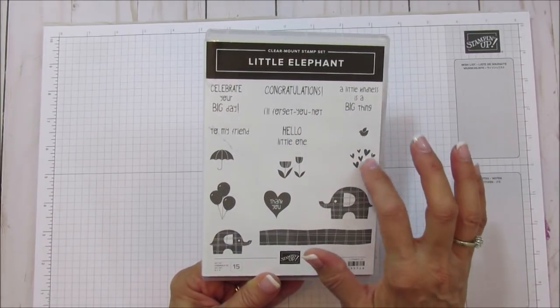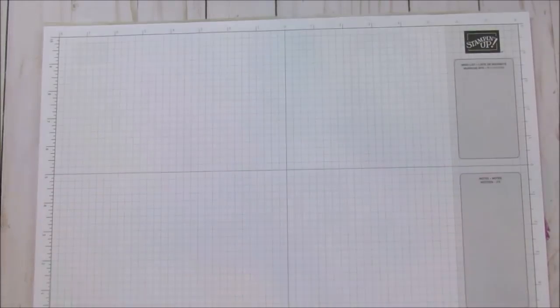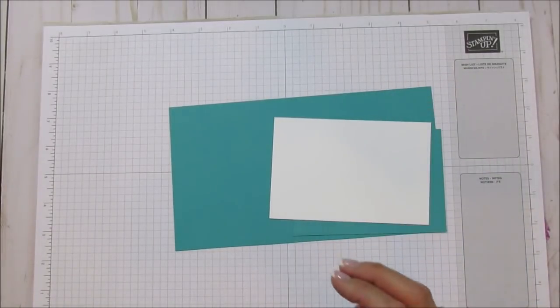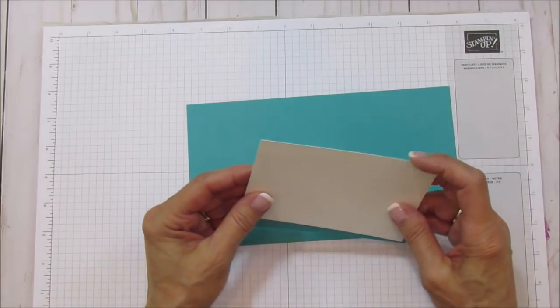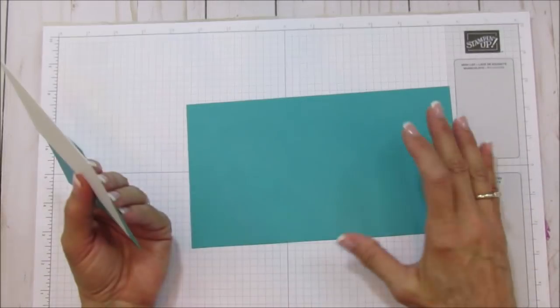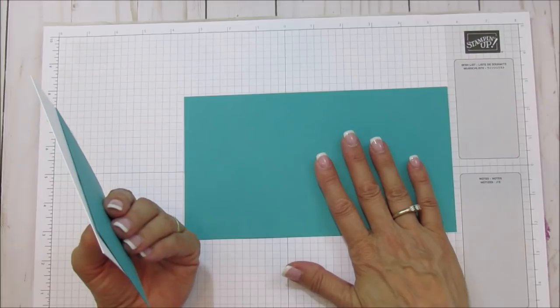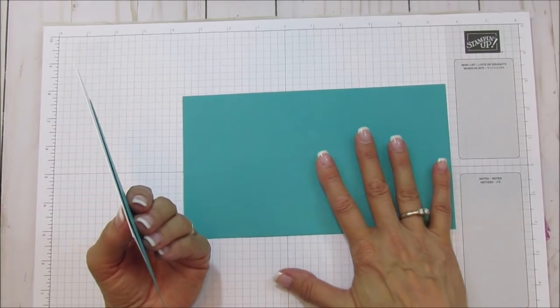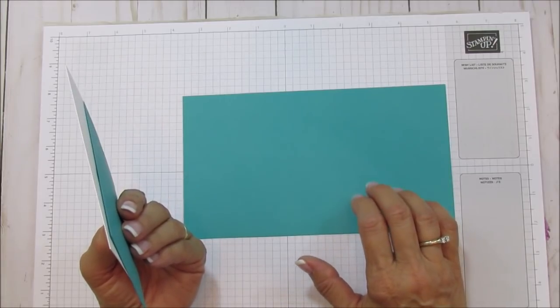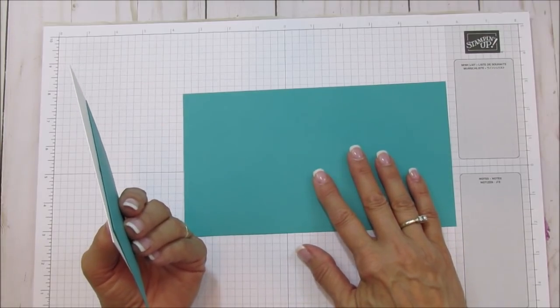I'm going to do this one in Bermuda Bay because the soft seafoam is kind of light to see. Bermuda Bay is also a neutral color if you don't know the gender of the baby yet. Pool Party would be another good choice. You can absolutely choose one of our pinks or blues too. We've got a lot of them.